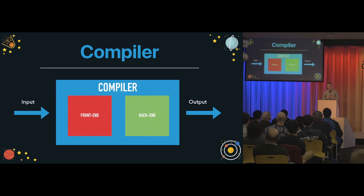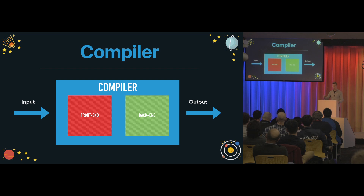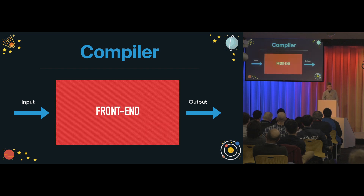If we look a little bit deeper in the compiler, we can see that it has a front end and also a back end. The front end is generally responsible for reading your code, turning it into some intermediate format, and passing it to the back end. After that, the back end can do some code generation. We're going to focus on the front end because that's mostly what we need for static code analysis.